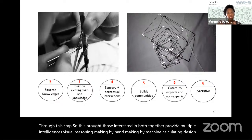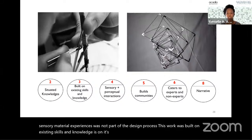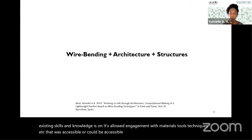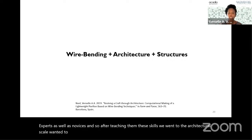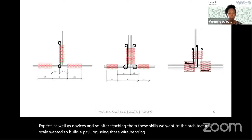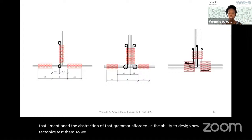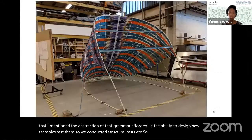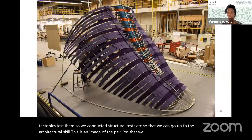These sensory material experiences were now part of the design process. This work was built on existing skills and knowledges and allowed engagement with materials, tools, and techniques accessible by experts as well as novices. After teaching them these skills, we went to the architectural scale, wanting to build a pavilion using these wire bending techniques. The abstraction of that grammar afforded us the ability to design new tectonics and test them — conducting structural tests to go up to the architectural scale. This is an image of the pavilion we made using those techniques.